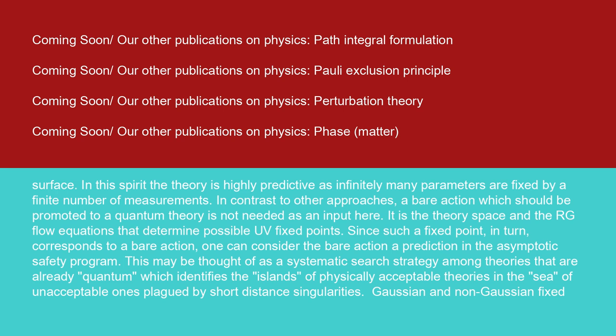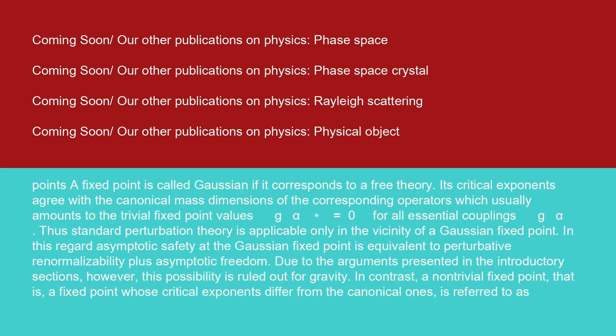Gaussian and non-Gaussian fixed points: a fixed point is called Gaussian if it corresponds to a free theory. Its critical exponents agree with the canonical mass dimensions of the corresponding operators, which usually amounts to the trivial fixed point values G_α* equals zero for all essential couplings G_α. Thus standard perturbation theory is applicable only in the vicinity of a Gaussian fixed point. In this regard, asymptotic safety at the Gaussian fixed point is equivalent to perturbative renormalizability plus asymptotic freedom. Due to the arguments presented in the introductory sections, however, this possibility is ruled out for gravity.